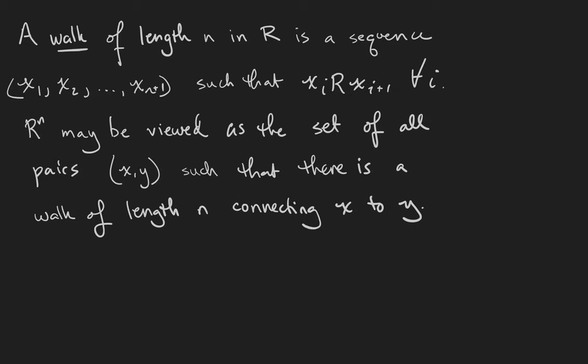We're finally going to talk about the transitive closure of a relation, but first let's review what a walk of length n in a relation R is. It's a sequence of elements of the set X such that each successive element is related to the one after it.